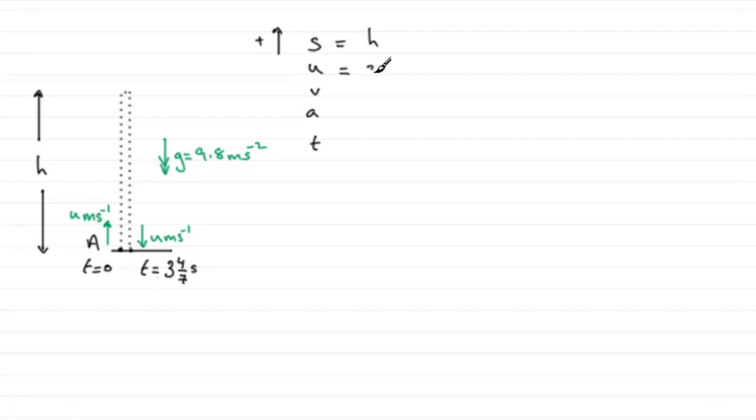Final velocity: when it gets up to the top here, it comes to instantaneous rest, just for an instant of a second. It's just at rest, in other words, zero meters per second. So final velocity V will be zero. The acceleration is downwards, so that's minus 9.8. And the time to get from here up to here, because of the symmetry of the problem, it will be half of 3 and 4/7. If you do half of 3 and 4/7, you get 25/14 of a second.